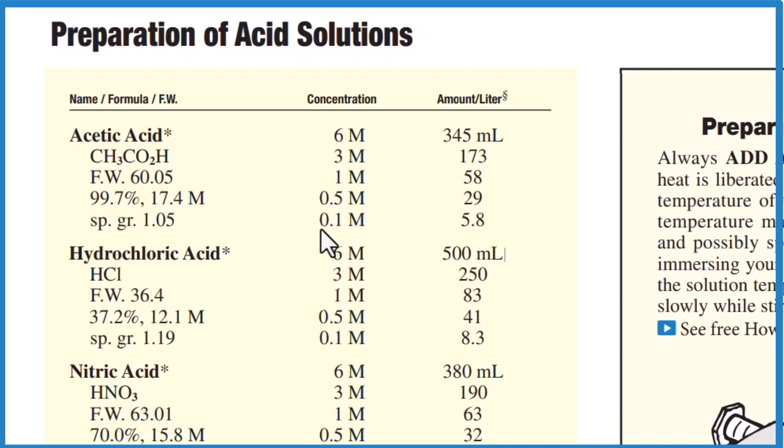Hydrochloric acid right here, we want to make a three molar solution. So a three molar solution means that we're going to put 250 milliliters of concentrated hydrochloric acid into one liter of water. So you get your volumetric flask, you add water, and you start adding your hydrochloric acid.